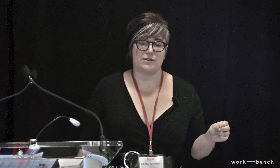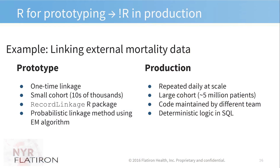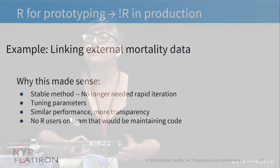I want to talk about a few examples of scenarios where we're using varying levels of R and why it makes sense. The first is when we use R for prototyping and then use something that's not R in production. One example is for linking external mortality data. We do oncology research, so we care a lot about survival analysis and mortality, and we have some internal and some external data. When we were linking them, the first prototype was something I implemented — just me working on it — so it made a lot of sense to use R. It was a one-time linkage for a smallish cohort of just a few tens of thousands of patients.